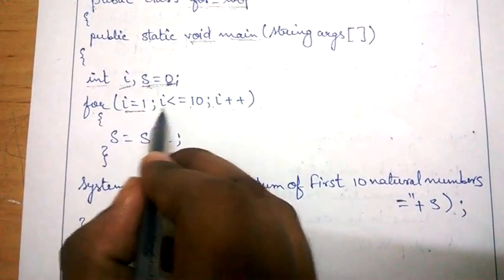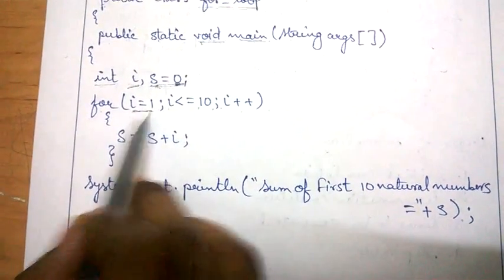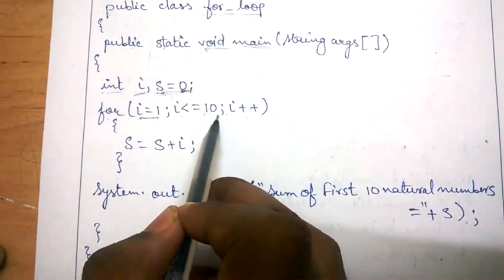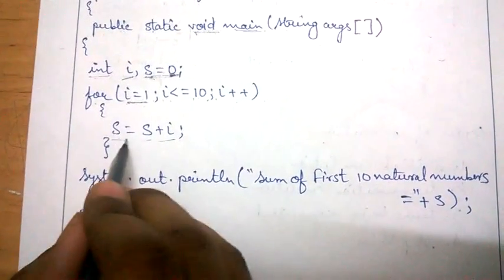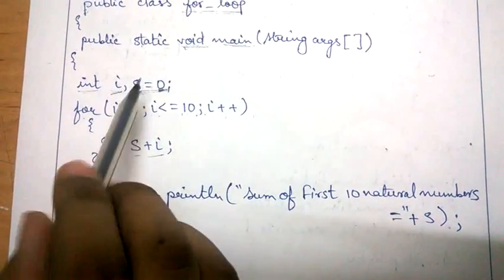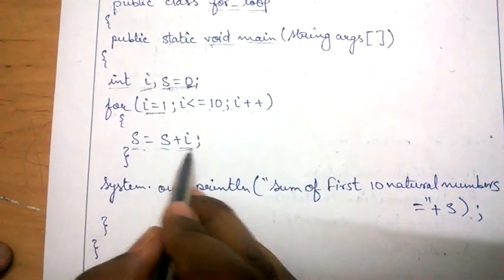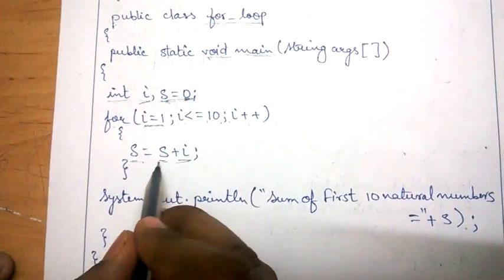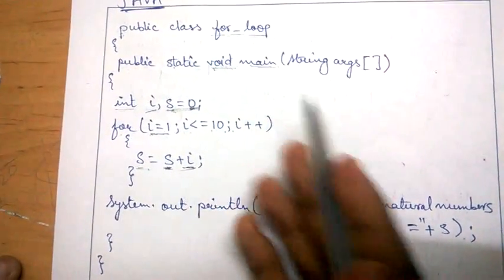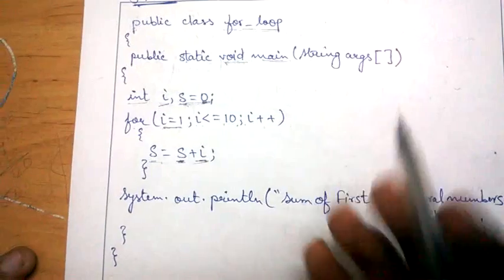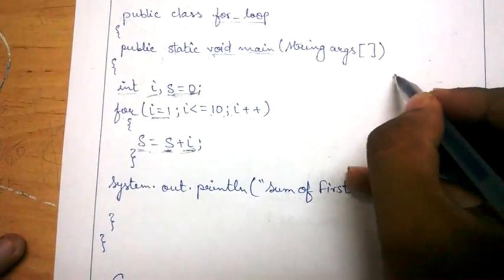For i equal to 1, i less than or equal to 10 — the program starts at i equal to 1, checks whether i is less than or equal to 10. Since 1 is less than 10, it goes inside the loop. Now, why I initialized s equal to 0 earlier — because here I am doing s equal to s plus i. If I don't specify any value for s, then a garbage value will be added and the program will give a compilation error or a runtime error. So s equal to s plus i — I will show you the dry run.